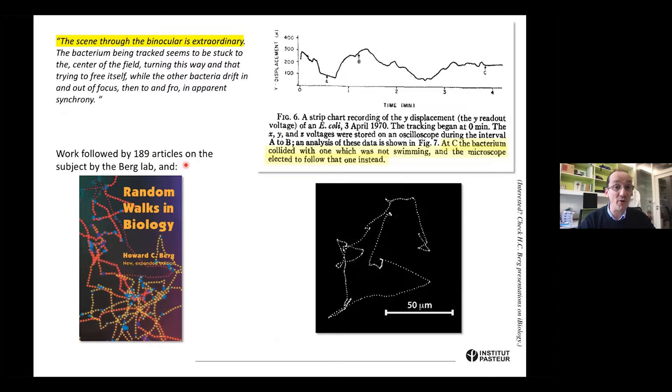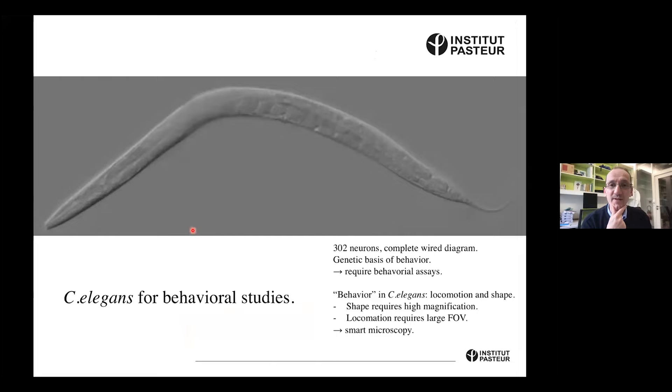This worked. I could not help but quote from the paper, the scene through the binocular is extraordinary. The bacteria stay immobile in the field. How do you measure the bacterial trajectory? You simply read the voltage from the stage. So you measure the position of the stage over time. At the time, there was no computer. The signal you see here is a picture, a snapshot of what's on the oscilloscope. This work spawned a huge literature. It's followed by 189 articles on the same subject, only by the lab of Professor Berg. With that and the progress he made, he was able to dissect the molecular basis for chemotaxis, for motility. Probably this book, Random Walks in Biology, is fantastic. In that case, smart microscopy was used to track fast moving objects.